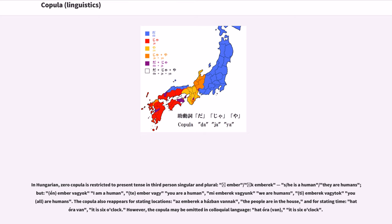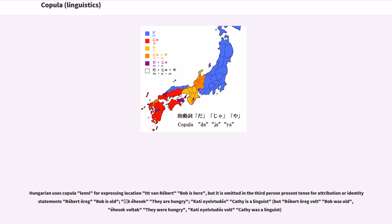In Hungarian, zero copula is restricted to present tense in third person singular and plural: 'ő ember,' 'ők emberek' (he is a human, they are humans), but 'én ember vagyok' (I am a human), 'te ember vagy' (you are a human), 'mi emberek vagyunk' (we are humans). The copula also reappears for stating locations and for stating time: 'hat óra van' (it is six o'clock). Hungarian uses the copula 'van' for expressing location: 'itt van Róbert' (Bob is here), but it is omitted in third person present tense for attribution or identity statements.